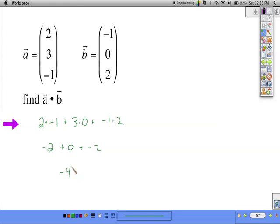So the dot product is negative 4. We could use this number to help us find the angle between these two vectors, as we're going to do in the next example. But we know that these two vectors are not perpendicular.